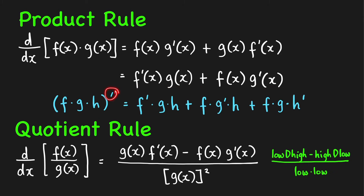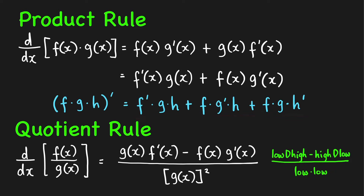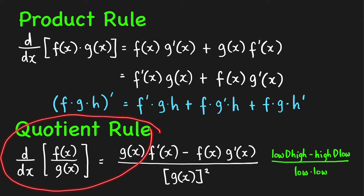We're using prime notation for the derivative. The derivative of a product of three functions is a sum of three products. Just take the derivative of one factor at a time — the derivative of the first factor, then the derivative of the second factor, then the derivative of the third factor.